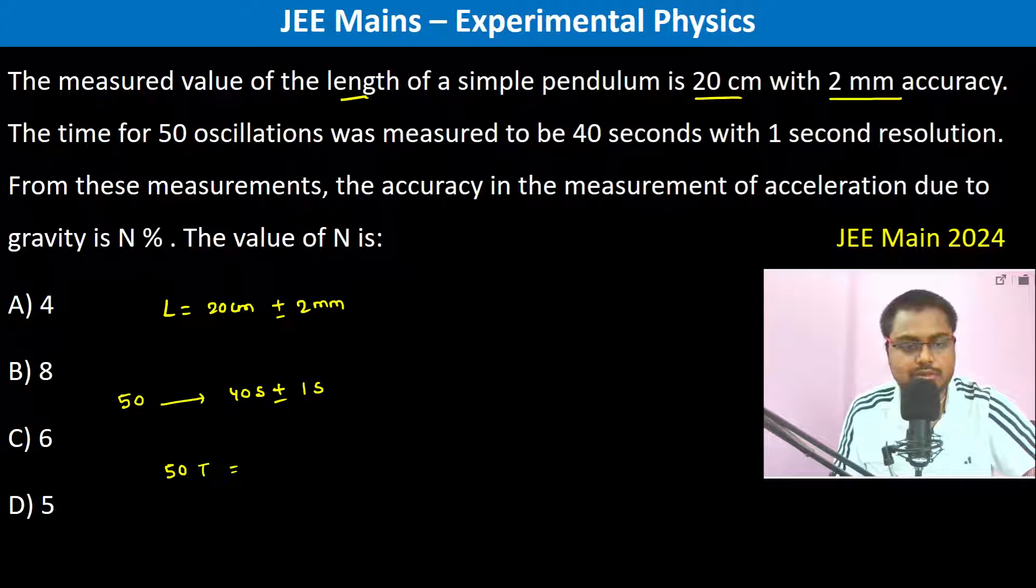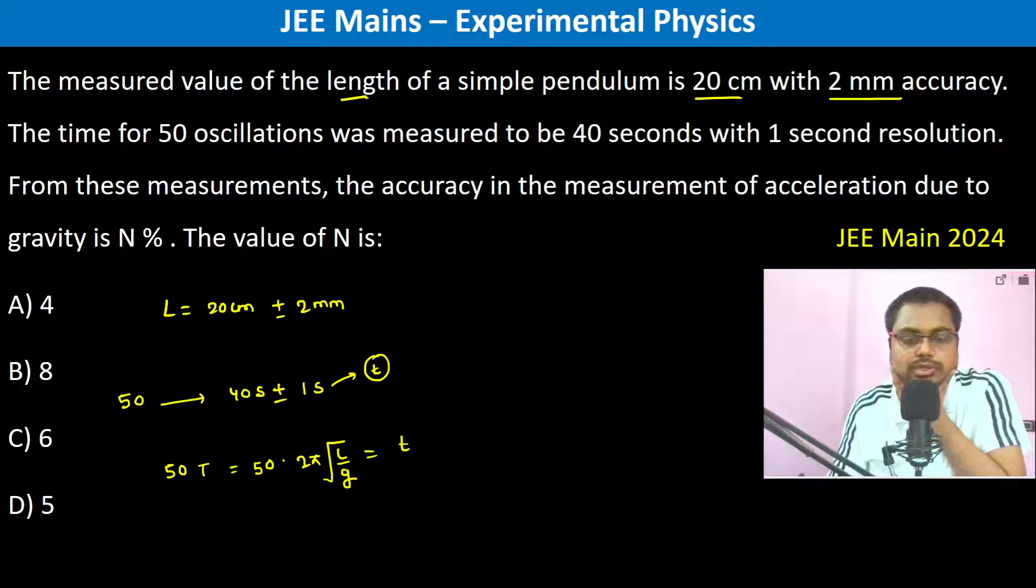Which is equal to 50 into 2 pi root l by g. This is equal to 40 plus minus, so this is the time which is measured. So what we do is we take ln on both sides.